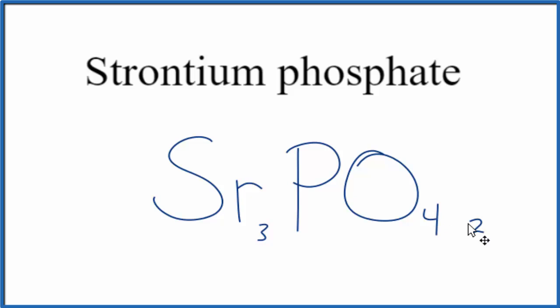And then, because we have 2 phosphate ions, we need to put parentheses around the phosphate. That makes the formula for strontium phosphate, Sr3(PO4)2.